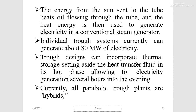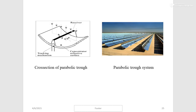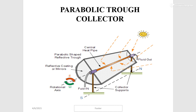Due to this thermal storage advantage, electricity can be generated even at night when the sun is not out. Currently all parabolic trough plants are hybrids. The figure on the left shows a cross-section of a parabolic trough, and the figure on the right is a picture from a solar power plant that uses a parabolic trough system. The schematic diagram explains the working principle of a parabolic trough collector.